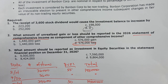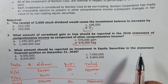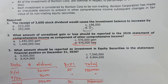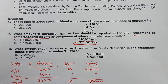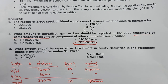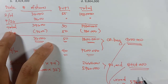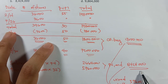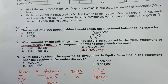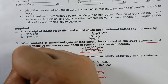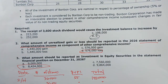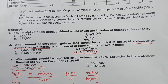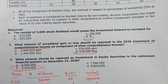Question number 3: What amount should be reported as investment in equity securities in the statement of financial position? That will be equal to the fair value of 8,424,000. Therefore question number 3, bravo is the final answer.